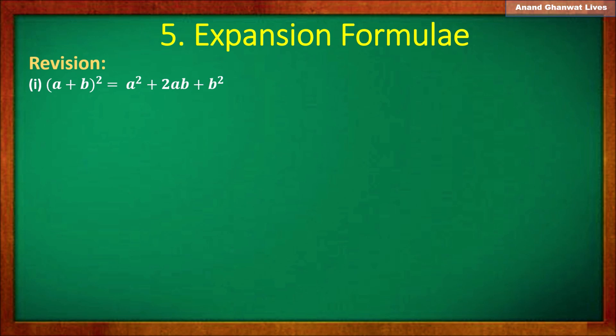The first formula we have learned — let us revise: (a + b)² is equal to a² plus 2 × a × b plus b².